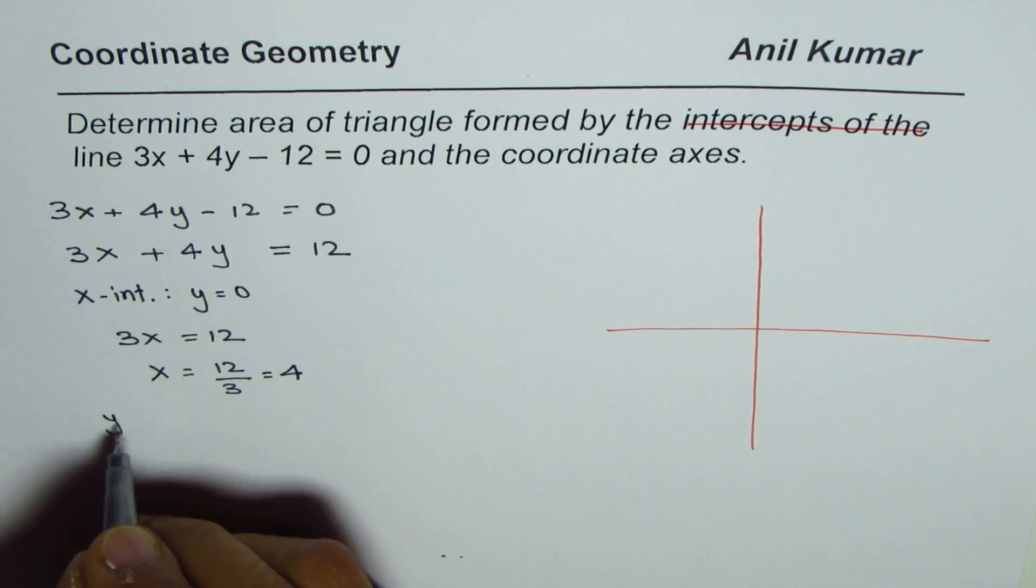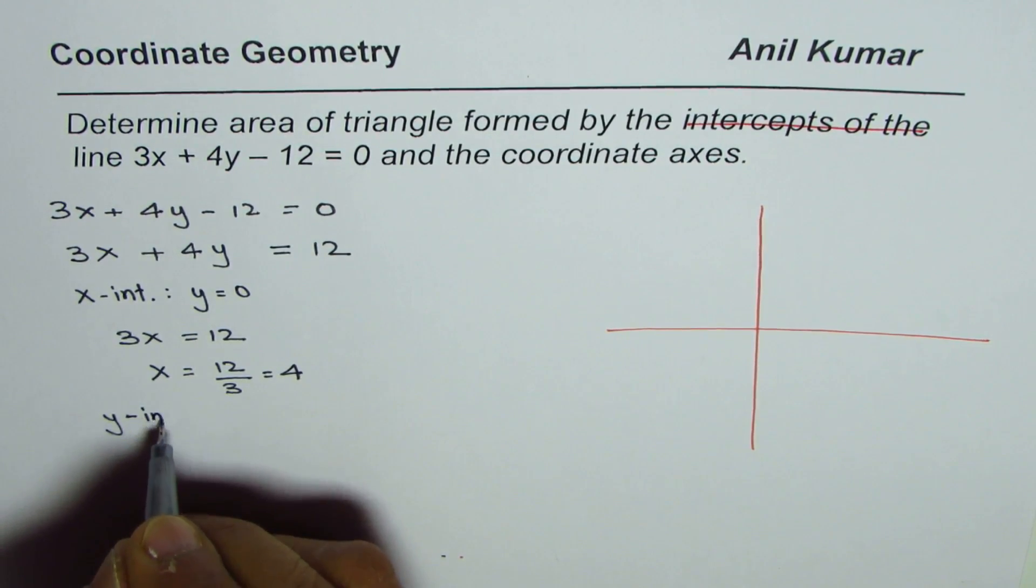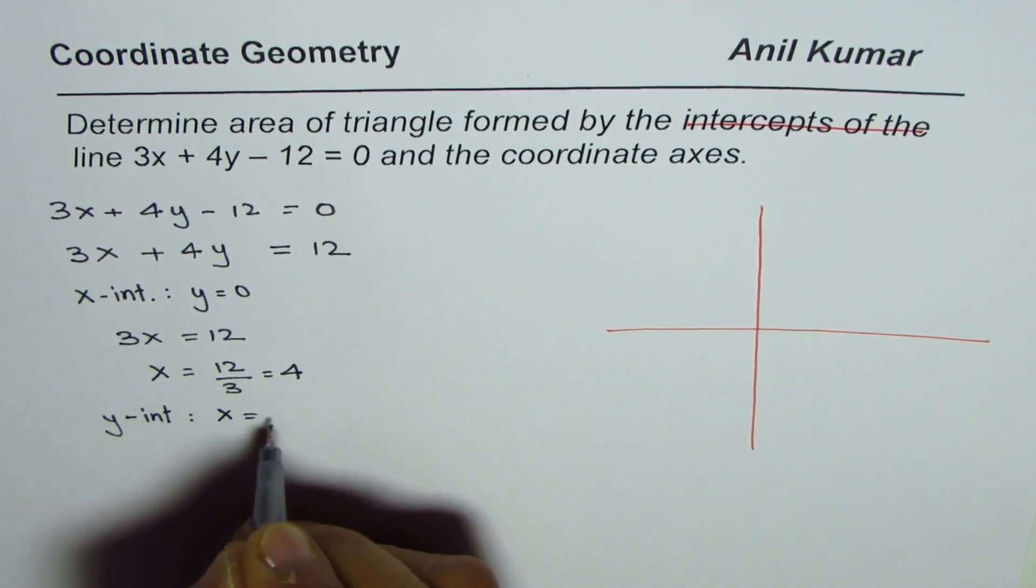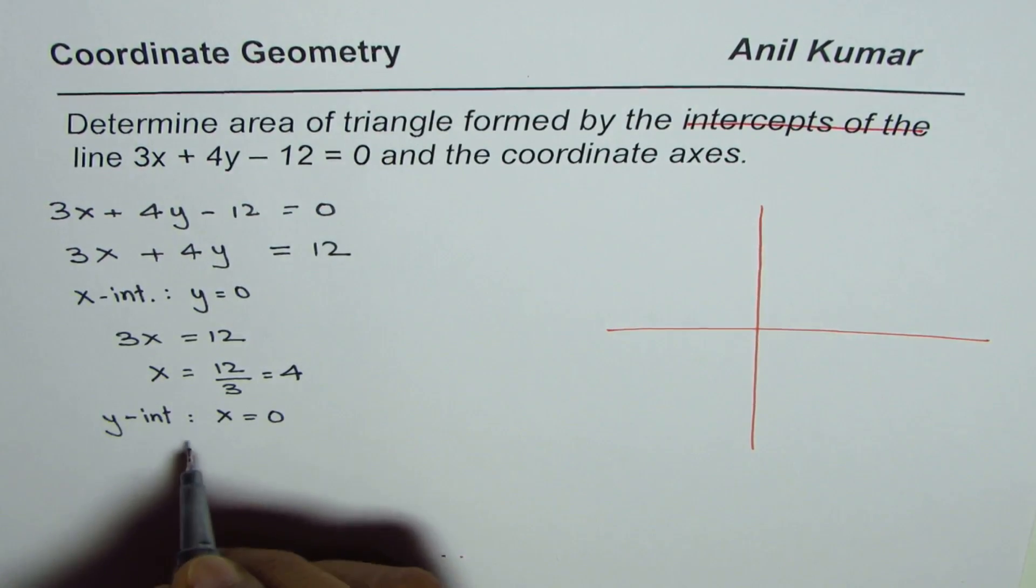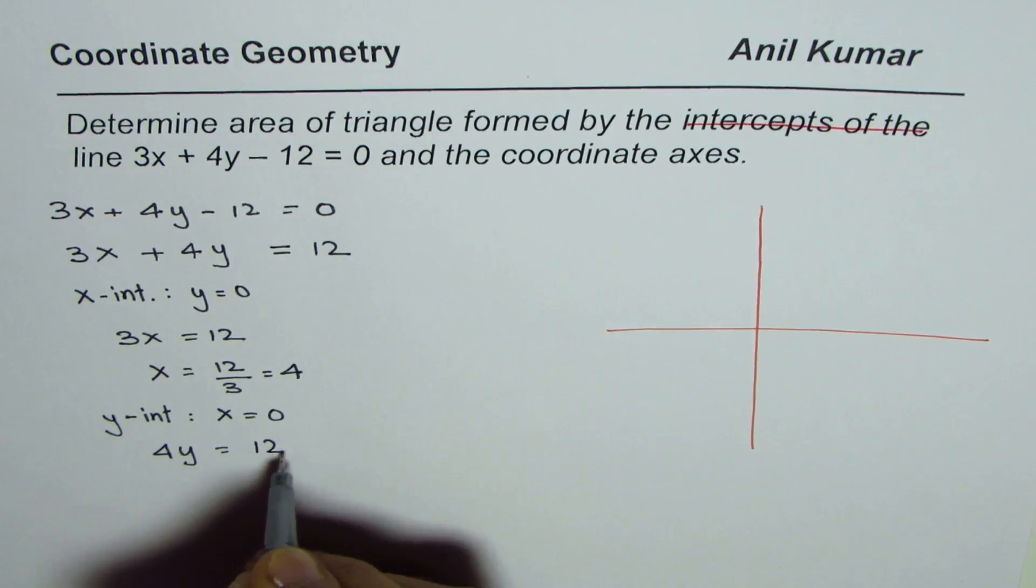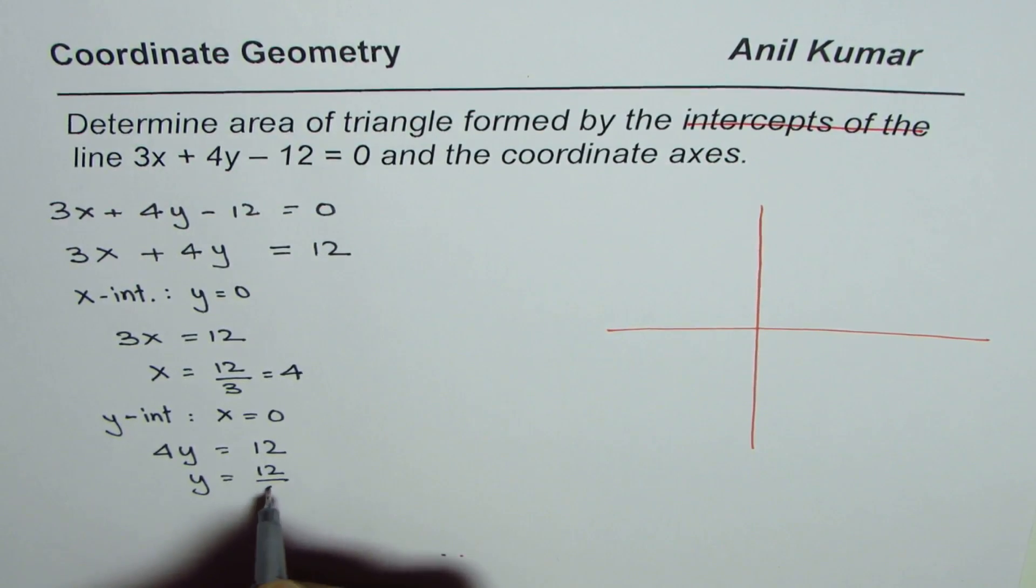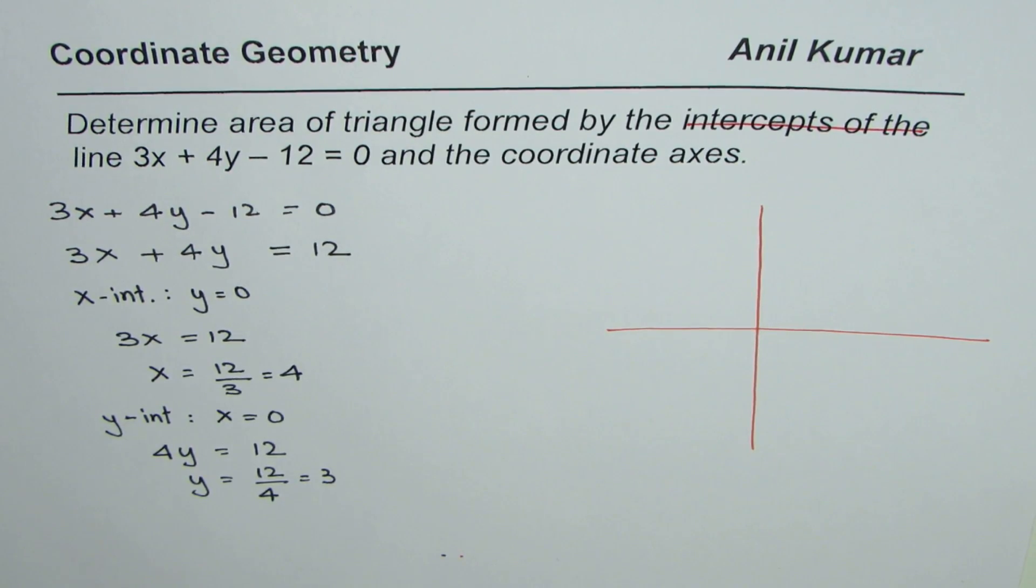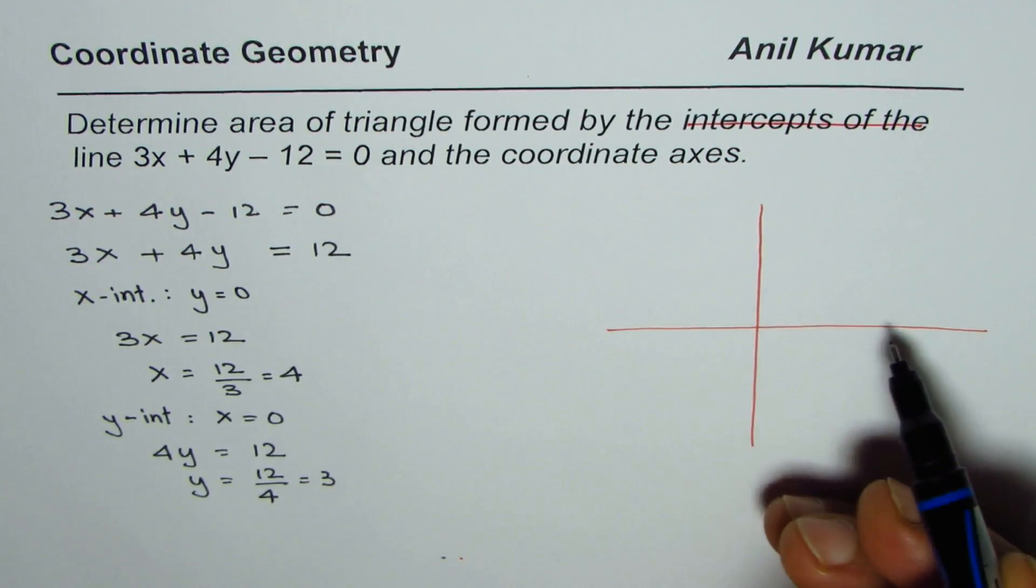Now let's find the y intercept. For y intercept x equals to 0. So I'll write 0 for x, so we get 4y equals to 12 or y equals to 12 divided by 4 which is 3. So we get x and y intercepts, 3 and 4.